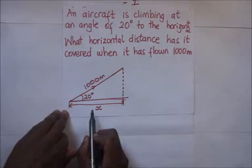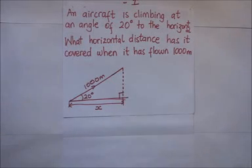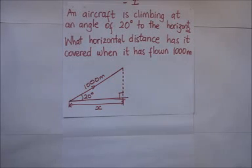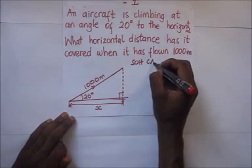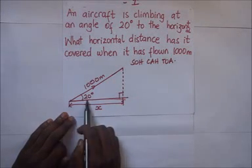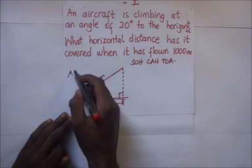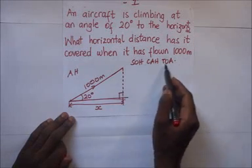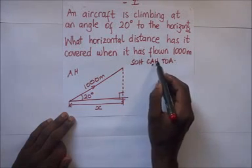To find our horizontal distance, we have formulated a right angle triangle. Using trigonometric ratios, from our SOH CAH TOA, we have an angle, and at this angle the length X we are looking for is the adjacent side. So we have the adjacent side and we also have the hypotenuse. The trigonometric ratio that has both adjacent and hypotenuse is cosine.